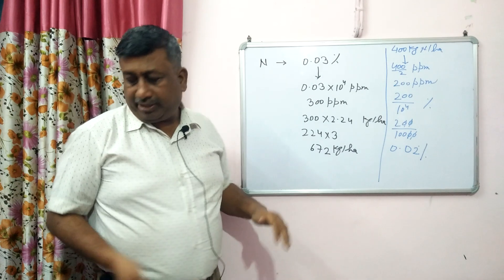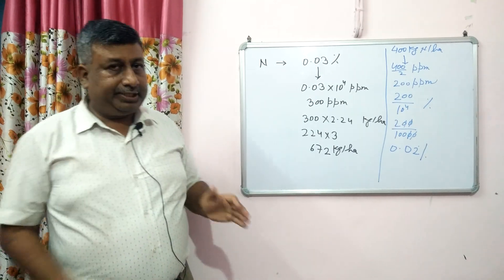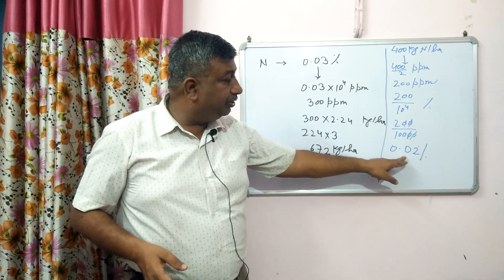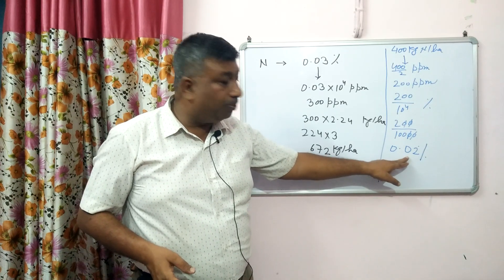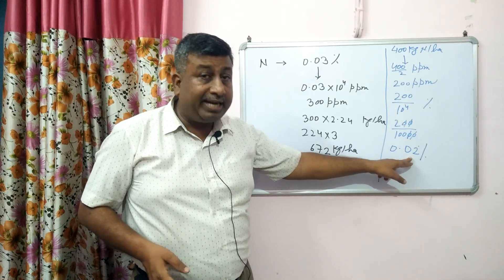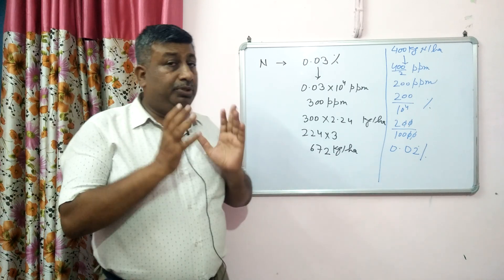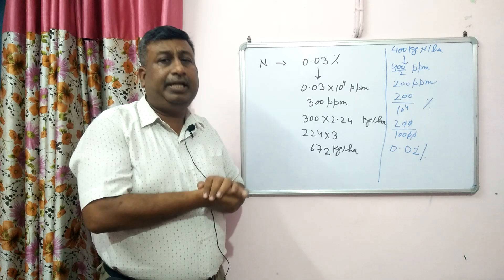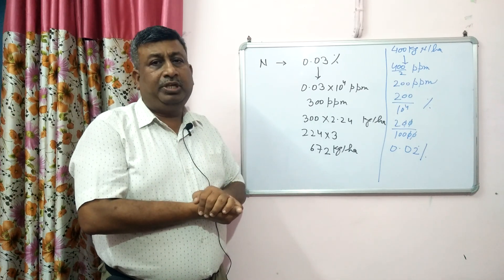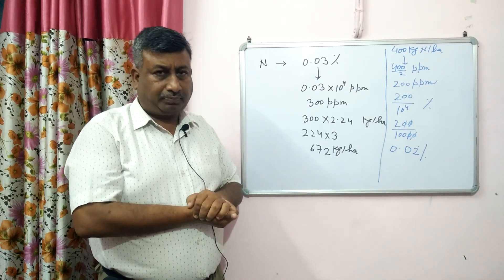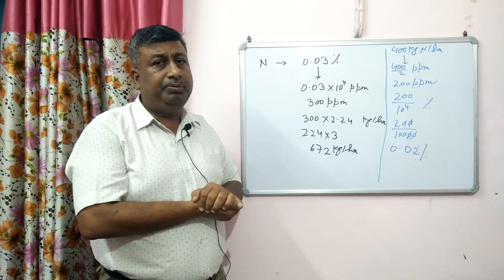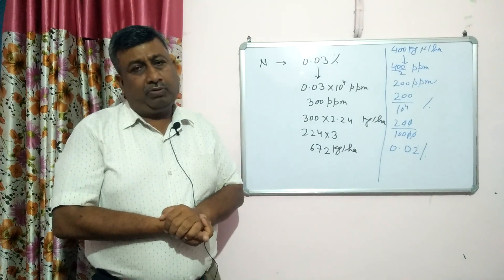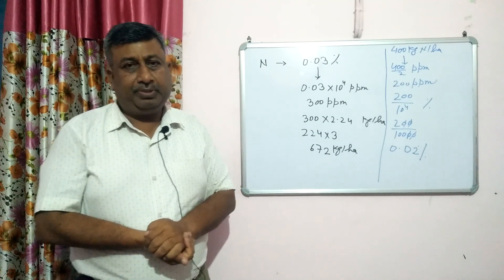So nutrient content in soil is generally very low — 0.02%, 0.01%, 0.005%, 0.008%. Nutrient content of 1%, 2%, or 3% does not occur; 1% is already a very large quantity. This is the way to calculate nutrient content. Thank you very much.